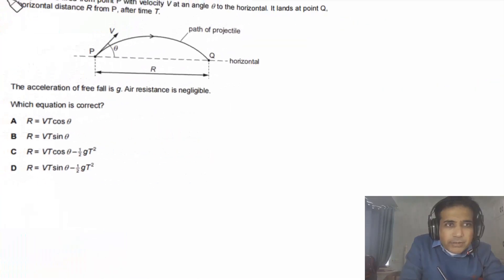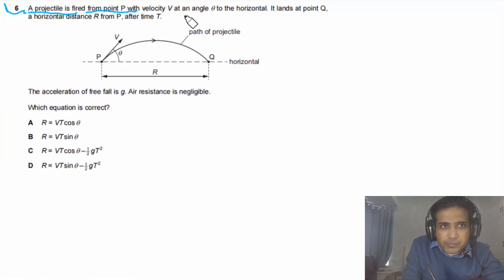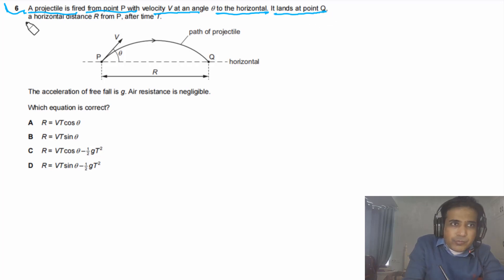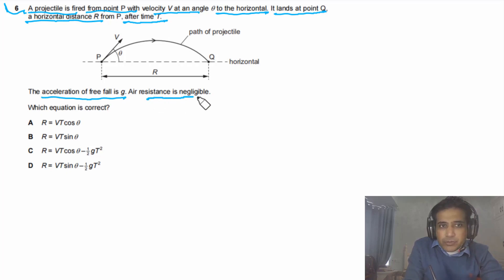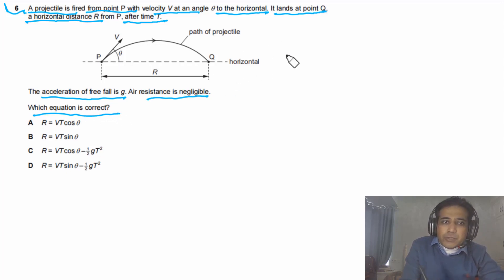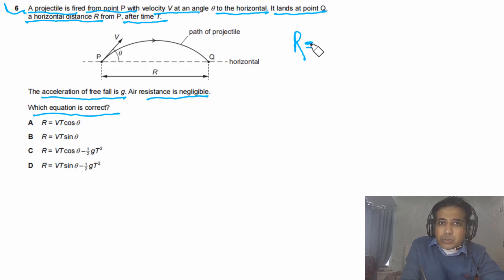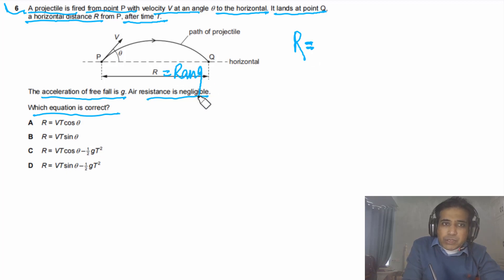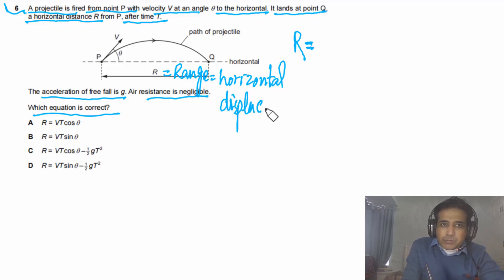Question 6: A projectile is fired from point P with velocity V at an angle theta to the horizontal. It lands at point Q, a horizontal distance capital R from P, after time capital T. The acceleration of free fall is g, and air resistance is negligible. Which equation is correct? To simplify, we need to calculate the value of R — which equation can we use to calculate the range R, which is simply the horizontal displacement.